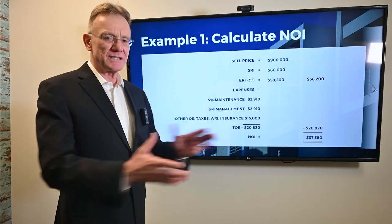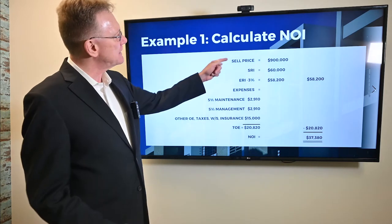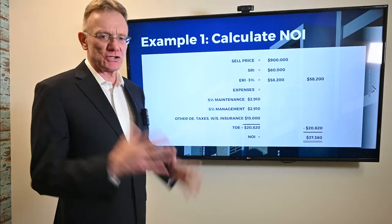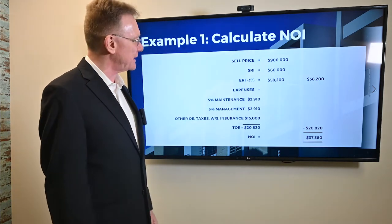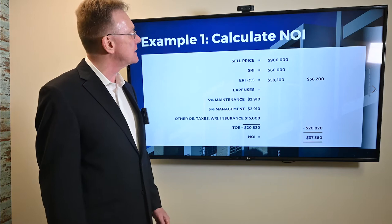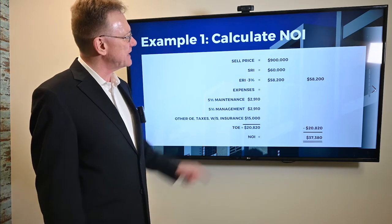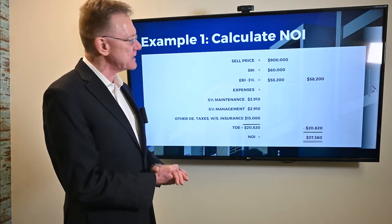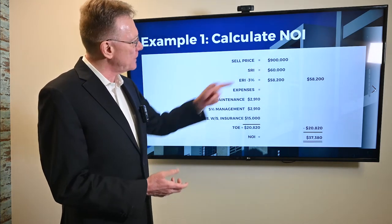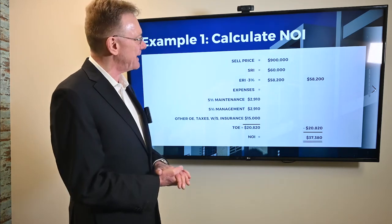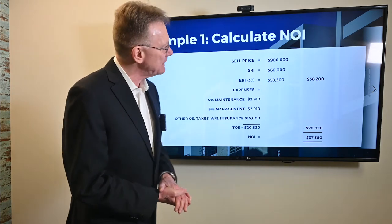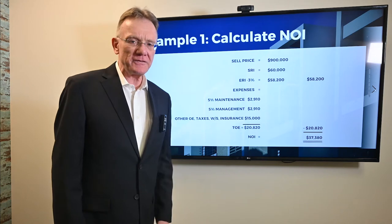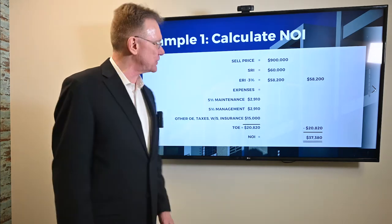Let's take an example. Let's assume we have a property that sold for $900,000. We have a scheduled rental income of $60,000, and when we deduct 3% for vacancy and bad debt, that gives us an ERI of a little over $58,000.